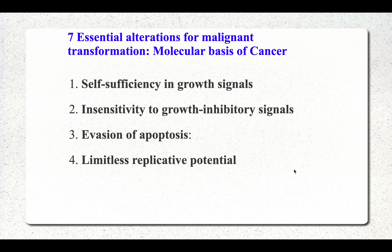In the case of malignancy or neoplasia, there are seven essential alterations that take place. These form the main molecular basis of carcinoma. We will discuss each alteration in detail, including which gene is involved in each case.